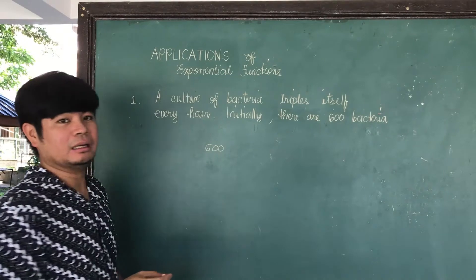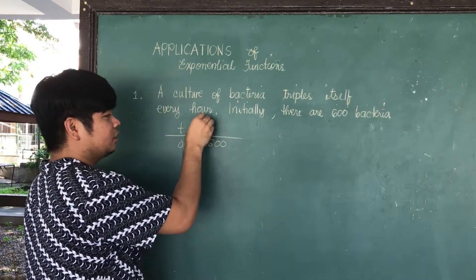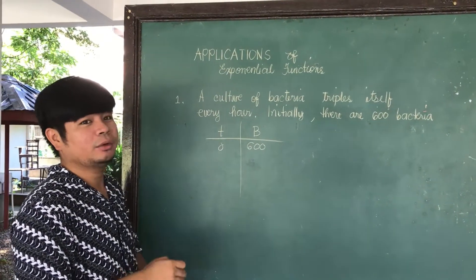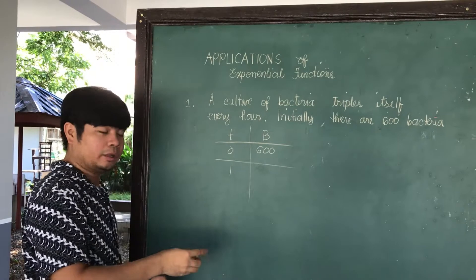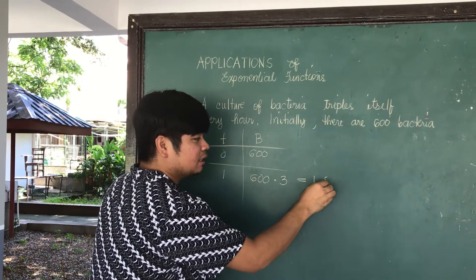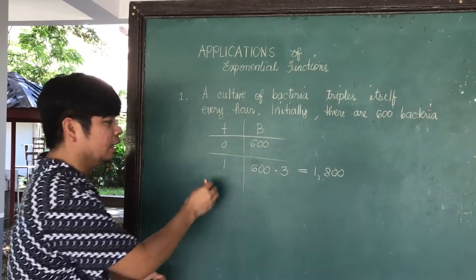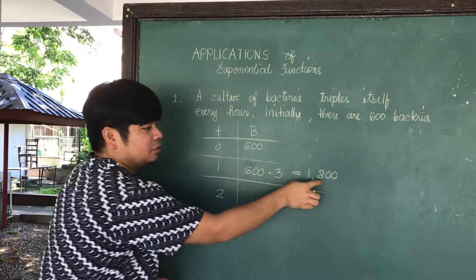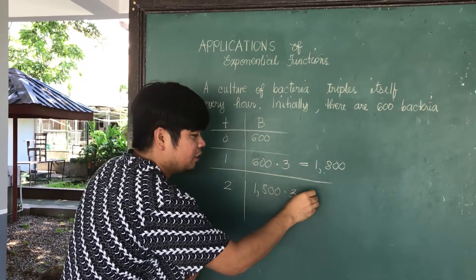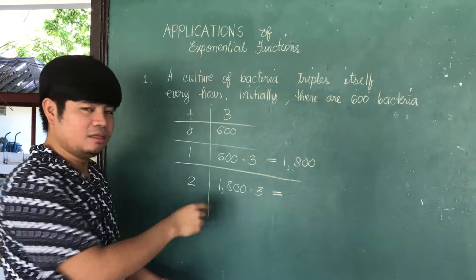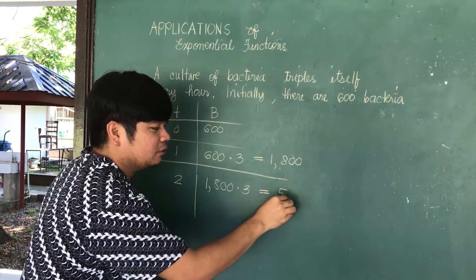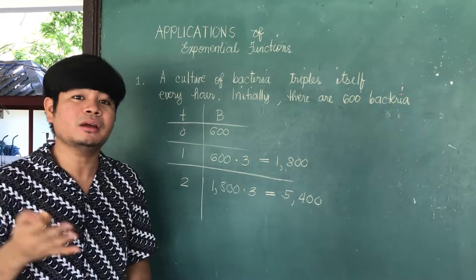Initially there are 600 bacteria when time is zero. On the first hour, the bacteria triples itself: 600 times three gives 1,800 bacteria. On the second hour, 1,800 will again triple — 1,800 times three gives 5,400 bacteria staying in the culture.